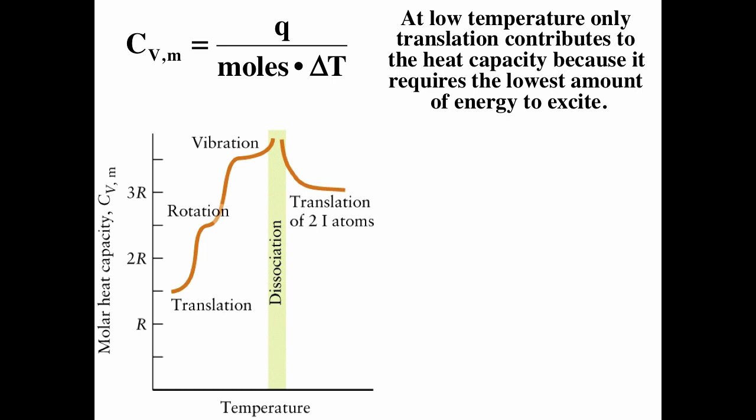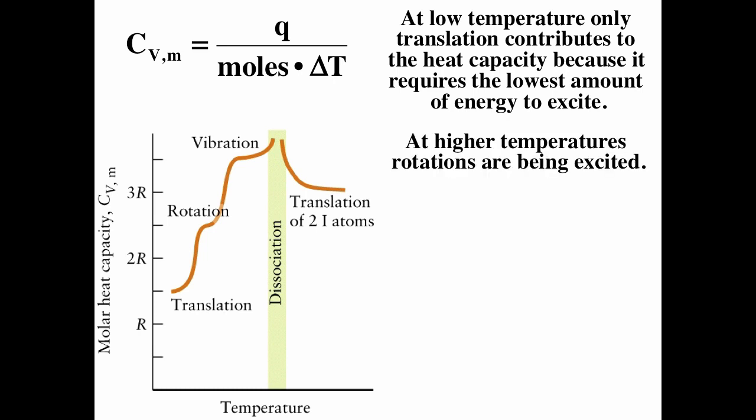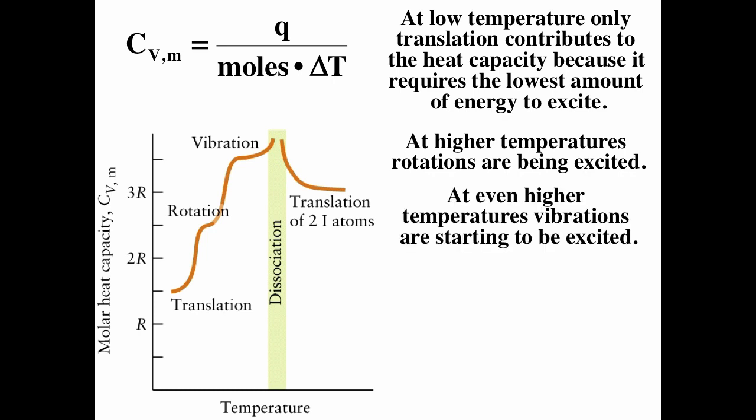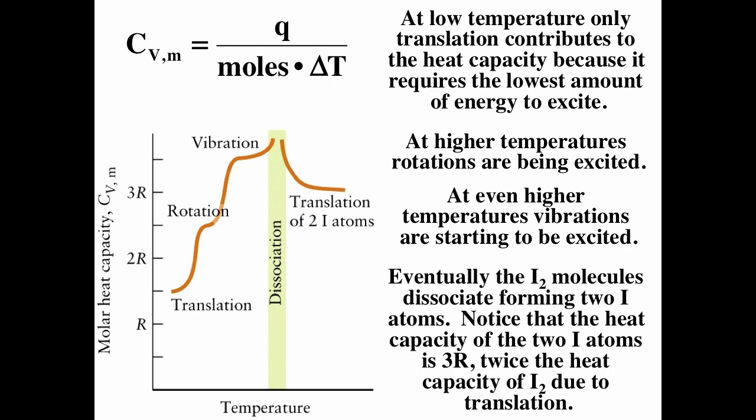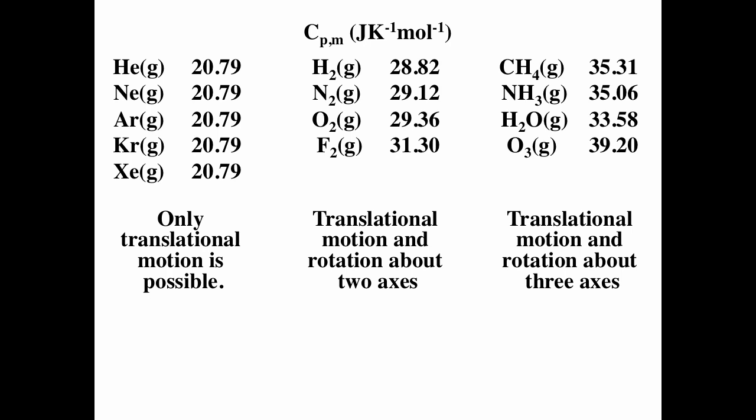At low temperatures, only translation contributes to heat capacity because it requires the lowest energy to excite. At higher temperatures, translation and rotation contribute. At even higher temperatures, vibrational degrees of freedom are excited. Here are three columns of molar heat capacities at constant pressure. Noble gases (monatomic) have only translational degrees of freedom and the lowest heat capacity. Diatomic gases have translational and rotational contributions — slightly higher. Nonlinear polyatomic molecules have three translational and three rotational degrees of freedom and the highest heat capacities in the table.